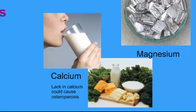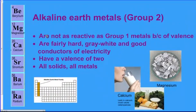Calcium is another popular element in this group — it's essential, especially for our bones. If you lack calcium in your diet, it can cause osteoporosis, which is bone weakening. Both calcium and magnesium are essential elements for your body. Beryllium is used in a lot of rocket housing. Radium was used in Rutherford's gold foil experiment, which we've talked about before. We're also going to do a lab with alkaline earth metals in class, where you'll see how they react to different compounds.